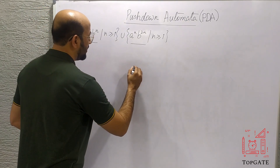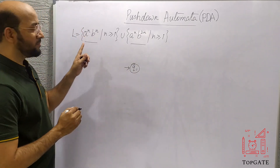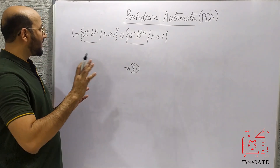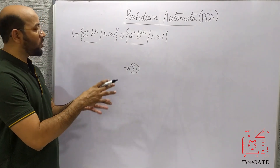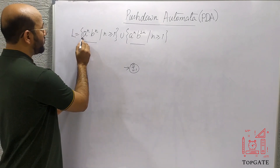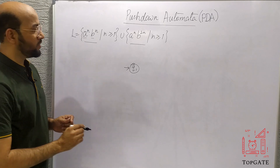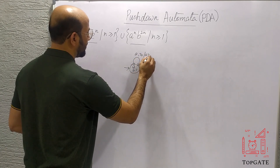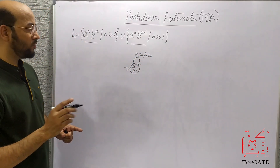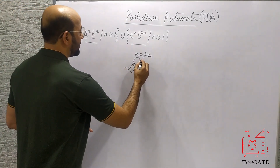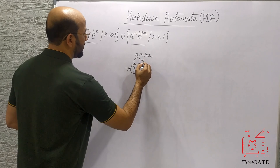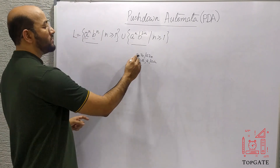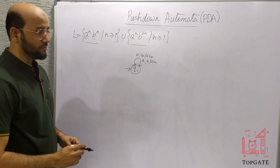First, for a^n b^n, I will take an initial state Q1. The concept is: while a is coming, we push it into the stack. So I will take a move for a — that is a comma Z0 slash a Z0 — meaning if a comes and the topmost element in the stack is Z0, we push it. Similarly, if a second a comes and the topmost element is now a, we simply push it into the stack again. So all the a's will be pushed into the stack using these two transitions.